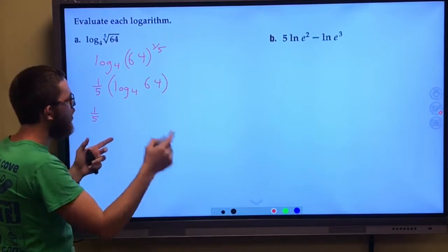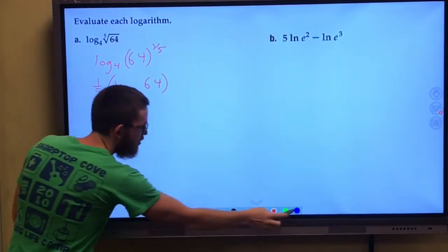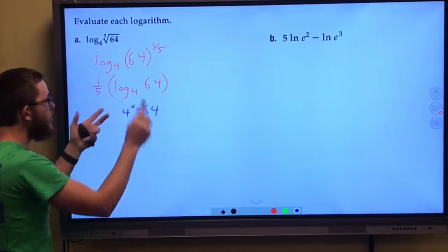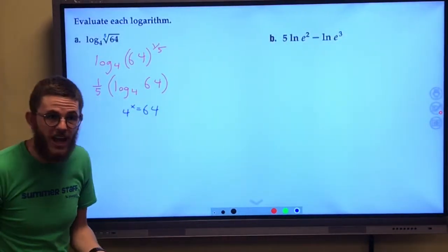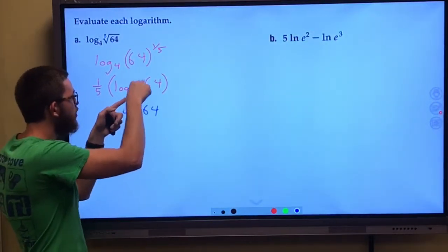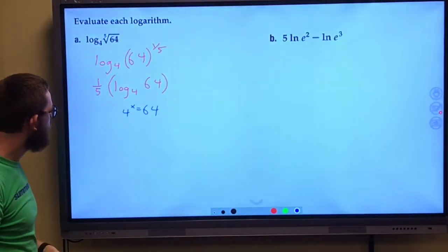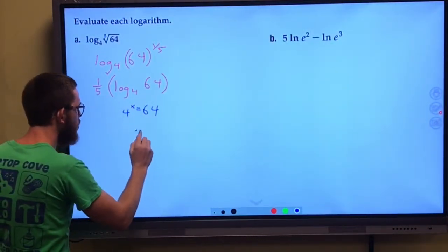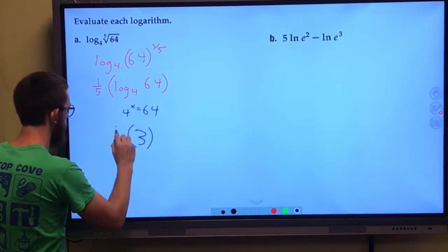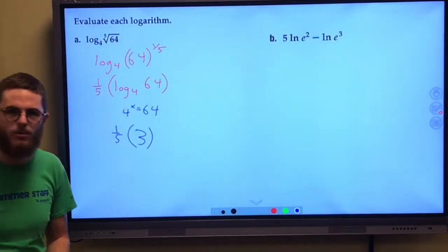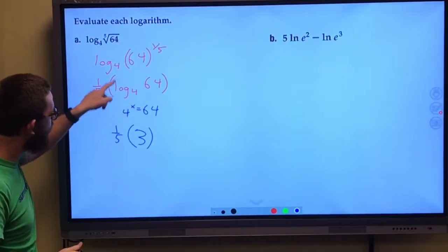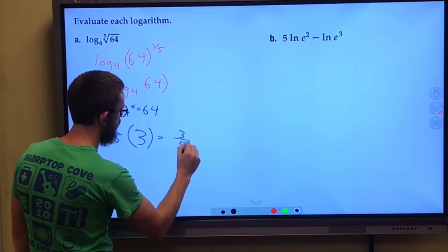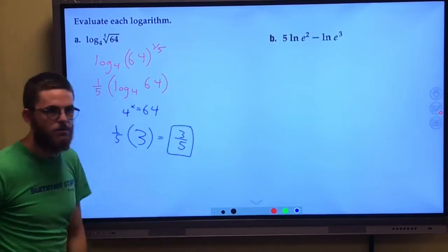Well, remember, a log is an exponent. So think for a second. 4 raised to what power gives me 64? That's what log base 4 of 64 is asking. 4 as a base raised to what power gives me 64? And it's 4 cubed that gives me 64. So this right here is a 3. So this is really 1 fifth times 3. I evaluate log base 4 of 64, got 3. 1 fifth of 3 is 3 fifths. Bingo, bingo.